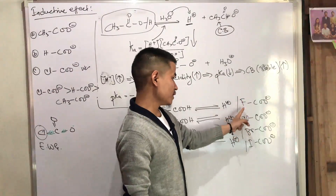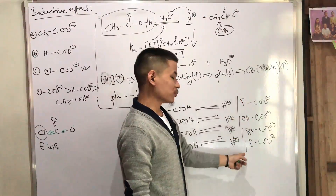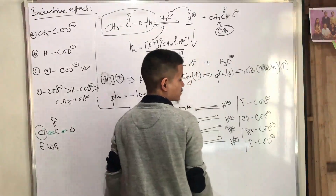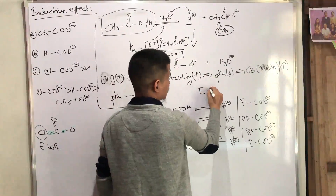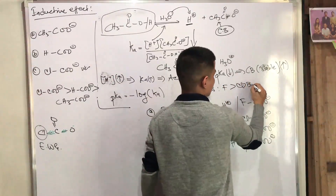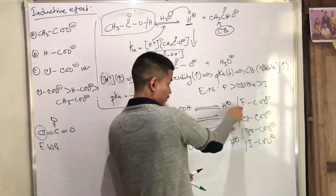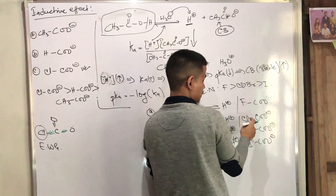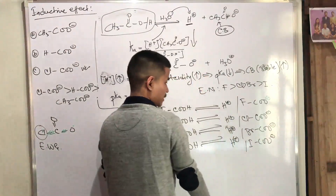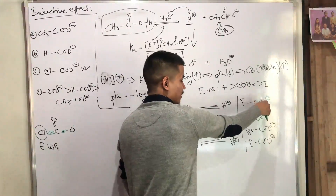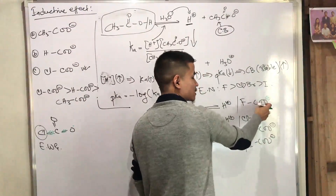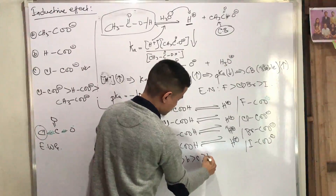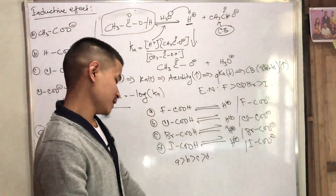We can compare based on electronegativity order: fluorine is most electronegative, then chlorine, then bromine, then iodine. The negative charge is neutralized by the halogen — making the conjugate base more stable. Fluorine, being most electronegative, gives the most stable conjugate base. So the acidity order follows: fluoroacetic > chloroacetic > bromoacetic > iodoacetic acid.